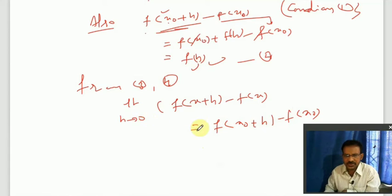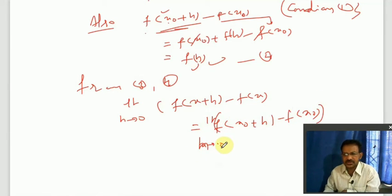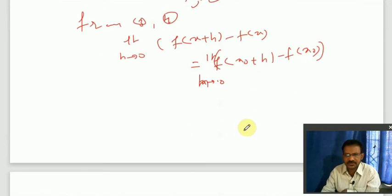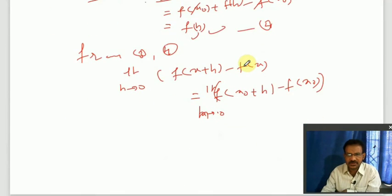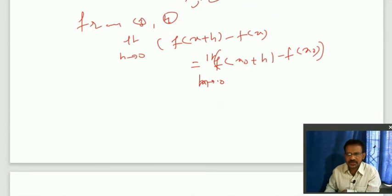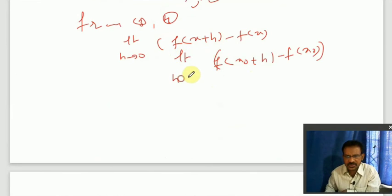So limit h tends to 0 of f(x₀+h) is equal to f(x₀) — this is the continuity condition at x₀ from condition 2. From equation 2, limit h→0 of f(x₀+h) minus f(x₀) equals limit h→0 of f(h). Since f is continuous at x₀, limit h→0 of f(x₀+h) - f(x₀) equals 0.